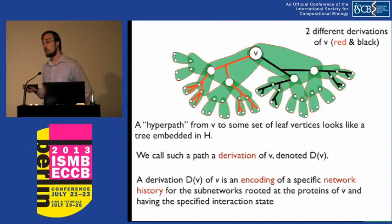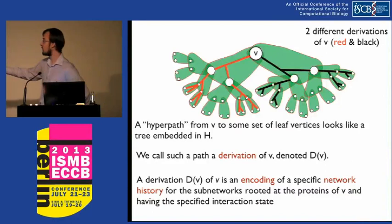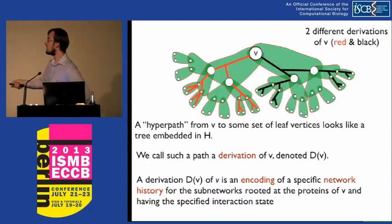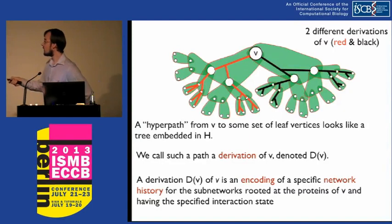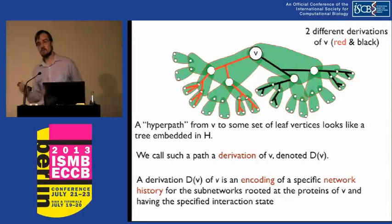This combinatorial structure encodes the potential space of network histories that could have occurred. A history in this structure is a hyper path from some root node — representing the most ancient ancestral network — to some set of leaf vertices representing potential extant interactions. It really looks like a tree embedded in this combinatorial structure. What you see between the red and black are two potential hyper paths from V to the set of leaves. We call each of these a derivation — terminology from natural language processing, where you derive an ancestral state via extant observations. A derivation represents an encoding of a specific network history for the sub-networks of proteins at V.